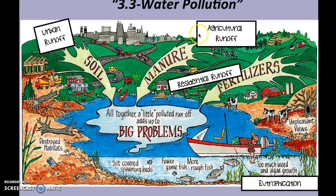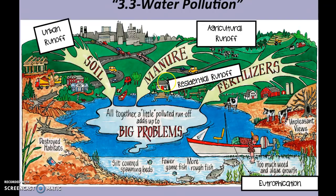Agricultural runoff is going to be coming from farms — it might even be some manure from those cows — so fertilizer and pesticide stuff that would be sprayed on crops. Residential runoff is going to be from houses and developments, places where you guys are going to live. And we have eutrophication beginning down here at the bottom: too much weed and algae growth in this water source.